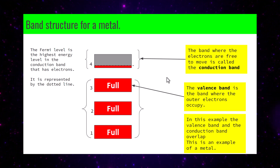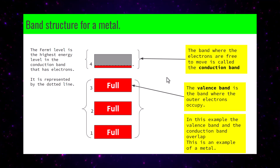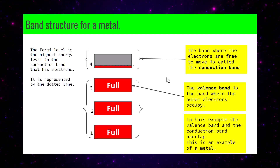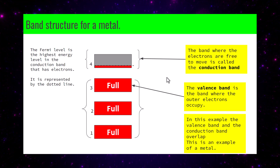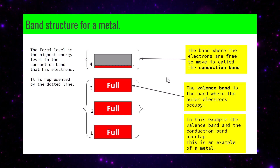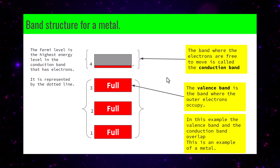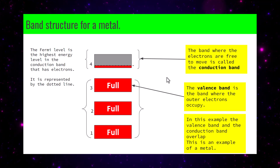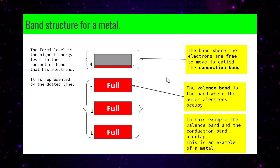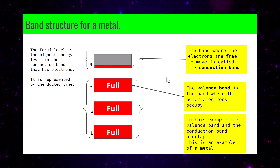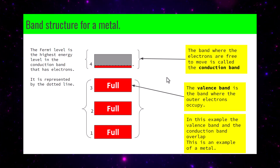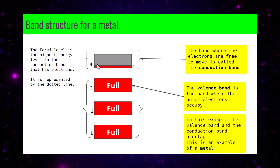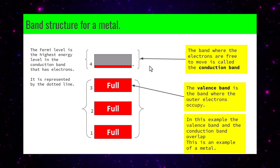There's one more important concept: the Fermi level. The Fermi level is the highest energy level in the conduction band that has electrons — another way of thinking about it is that it's where you'd expect to find the topmost electrons. It's a bit like the waterline in a glass of water. The Fermi level is represented as a dotted line.